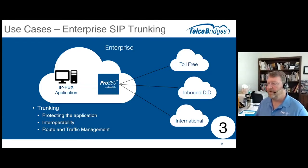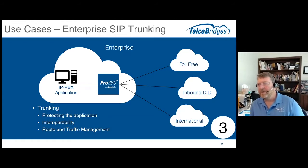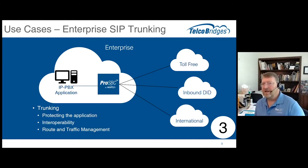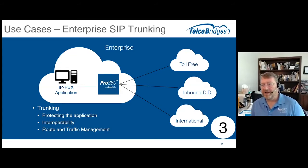They might have a toll-free operator. They might have one or more inbound DIDs, international inbound and outbound operators. Really, this is kind of like bring-your-own trunking — bringing in their own services from these different operators. They need to normalize them and bring them into an IPPBX application, so they need interoperability, but they also need to protect the application.